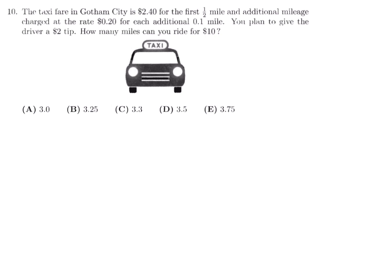The taxi fare in Gotham City is $2.40 for the first one-half mile and additional mileage charged at the rate of $0.20 for each additional 0.1 mile. You plan to give a $2 tip. How many miles can you ride for $10? So the $10 that you're going to spend, two of those dollars is immediately reserved for a tip. So you can only spend $8 on the actual ride. So that means the $2.40 that you initially start off with for the first mile, plus for every additional 0.2 miles you have to pay 0.2. So I'll times that by X, where X represents how many 0.1 mile segments we are going to travel.